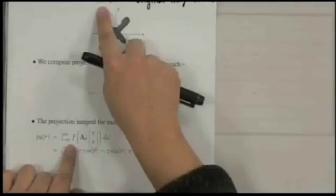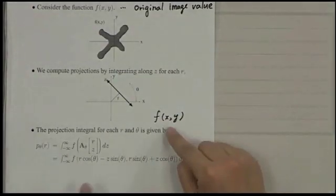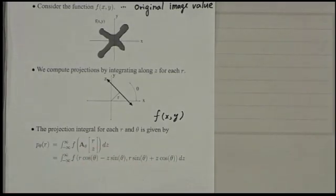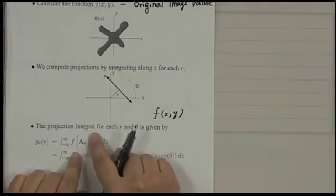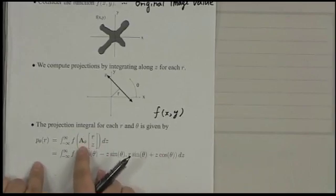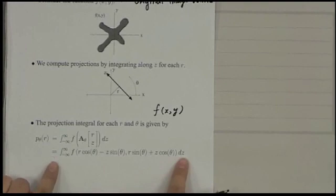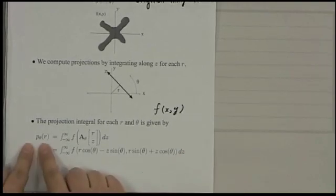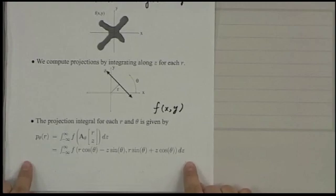But unfortunately, this f(x,y) value, we can access the image value only through the xy coordinate. So we have to change the rz to xy coordinate values. So we transform rz to xy coordinate values. So we have to multiply a theta. And then if we write it down this equation, we can get this equation. So this is the equation for the projection. And this projection is also called Radon transform.